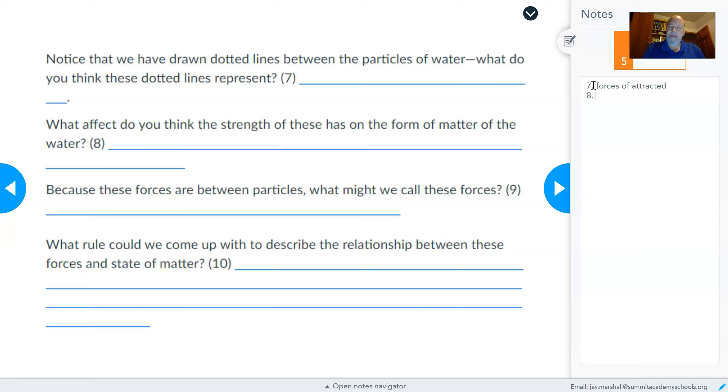We can ask the question, what effect do you think the strength of these has on the form of matter of the water? What we're going to say is, if the forces are stronger, it's more likely that the form of matter is a solid. The stronger these forces are, these inter-particle forces are, the stronger these forces between the particles are, the more likely it is that this substance is a solid. So we're going to say the stronger these forces, the more likely the state of matter is a solid. The stronger the forces, the more likely the state of matter is a solid.